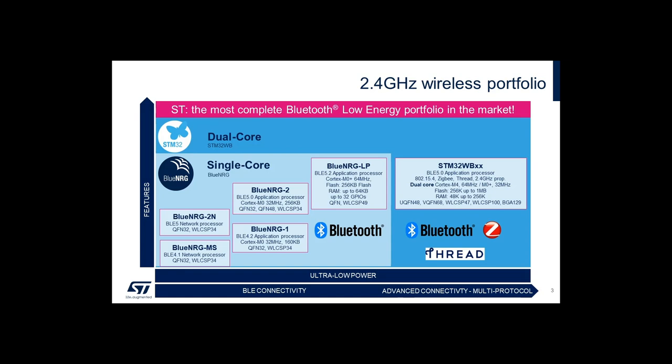Regarding our SoC product offering, we have our Blue Energy Dash 1 and Dash 2, based on a Cortex-M0 running at 32 MHz with up to 256k of flash and 24k of RAM. And our Blue Energy LP family of devices, certified as BT 5.2, based on a Cortex-M0 Plus running at 64 MHz with up to 256k of flash and 64k of RAM, fully compliant with the 2 Mbps, the long-range capability, and the advertising extension.